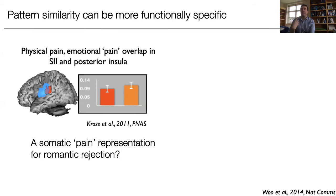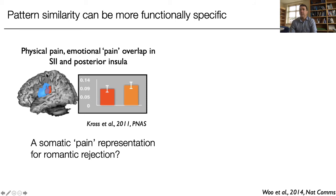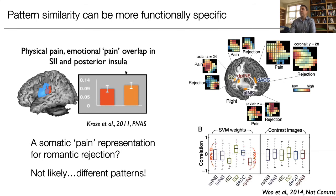Pattern similarity can be more functionally specific. Going back to the insula — the problem with the posterior insula story is that we and Christian Keysers have published work identifying posterior insula activation for romantic rejection as well. Does that mean rejection is like pain? When we looked more carefully using multivariate analyses, we found actually different patterns. Focusing on the posterior insula and S2, the patterns that code for the intensity of pain versus the intensity of rejection are quite distinct — in fact they're not related. There are different subpopulations or different local regions in a way we didn't appreciate before.